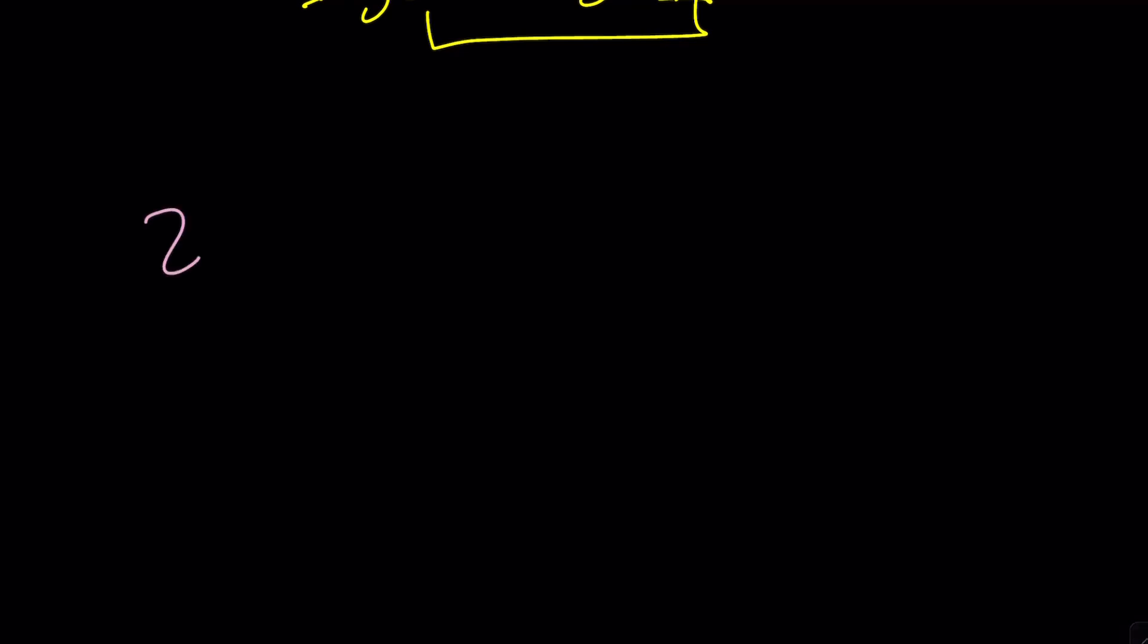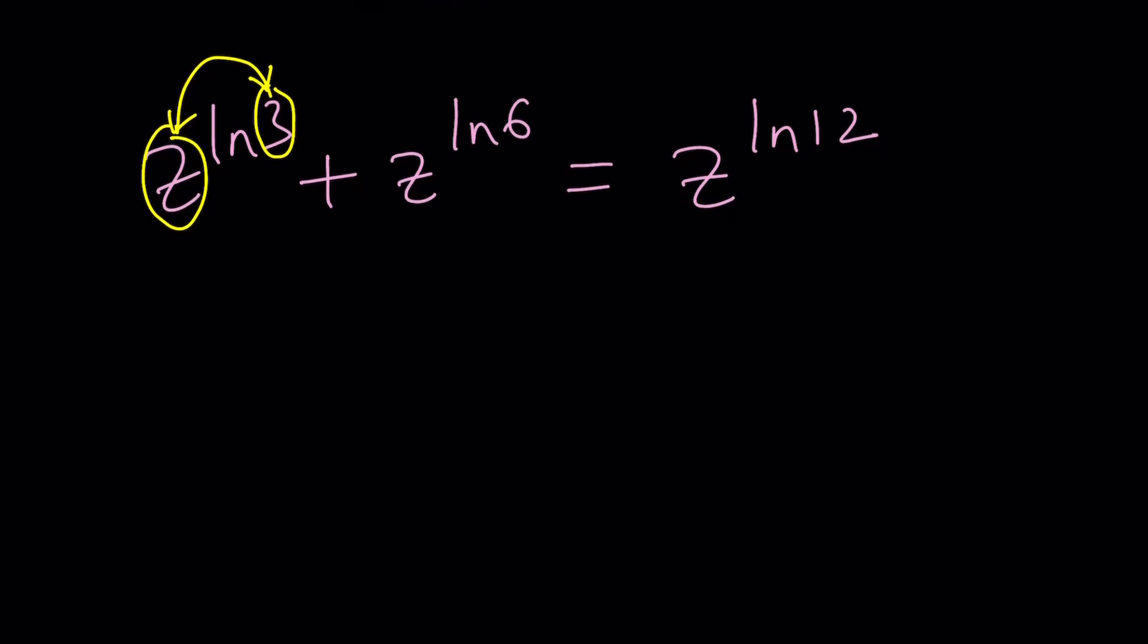So since we know this property, we can go ahead and use it for our problem. So we have Z to the power ln 3 plus Z to the power ln 6 equals Z to the power ln 12. Z to the power ln 3 is the same thing as 3 to the power ln z. Plus, this is equivalent to 6 to the power ln z. And this is equal to 12 to the power ln z. What's the most beautiful thing about this equation? Is that they all have the same exponent.